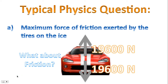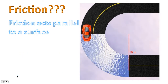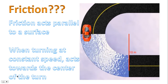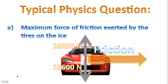So what about friction? Friction always acts parallel to a surface. In addition, for a car turning at constant speed, it acts towards the center of the turn — that's the force of friction drawn in the diagram, pointing in that direction. Remember, the coefficient of friction for this example is 0.6.